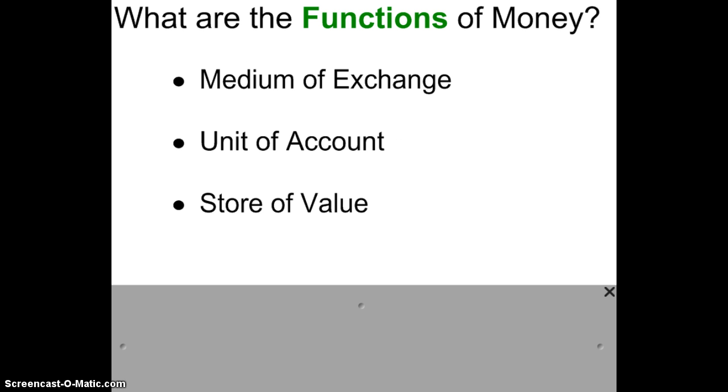Alright, so the functions of money. As I said, money is basically a medium of exchange, and that is, I would say, the predominant function of money is that it works in trade. You can trade money for one item, and the person who receives the money can use it to buy something else. So medium of exchange is the primary purpose.